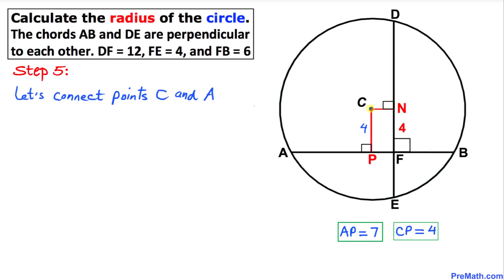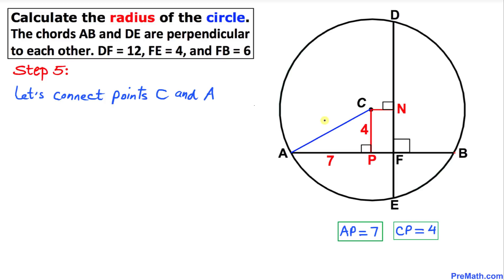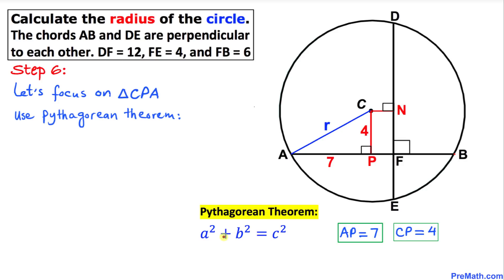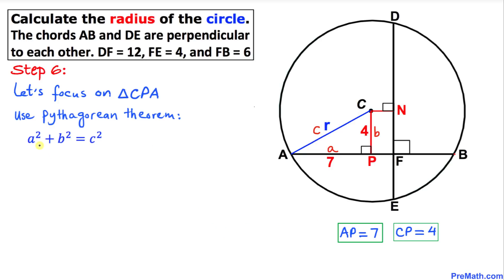In the next step, let's connect point C and point A. The segment AC is our radius, which we'll call r. Now let's focus on triangle CPA. Since this is a right triangle, we apply the Pythagorean theorem: a² plus b² equals c². In our case, side a is 7, side b is 4, and the hypotenuse c is r.